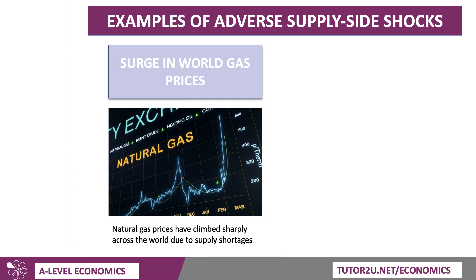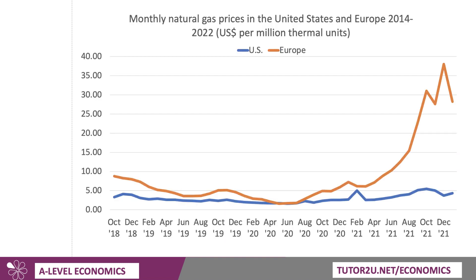So let's think about some examples of adverse supply-side shocks. The obvious one recently — I'm recording this video in the spring of 2022 — will be the huge surge in the world price of natural gas, due in large part to supply shortages but also a pickup in demand. Here's the chart showing the enormous increase in the European price of natural gas, much of which is of course imported from Russia. The United States has seen an increase, but not to the same extent.